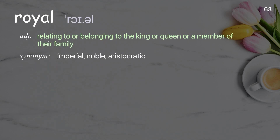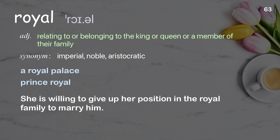Royal — relating to or belonging to the king or queen or a member of their family. Examples: a royal palace, prince royal. She is willing to give up her position in the royal family to marry him.